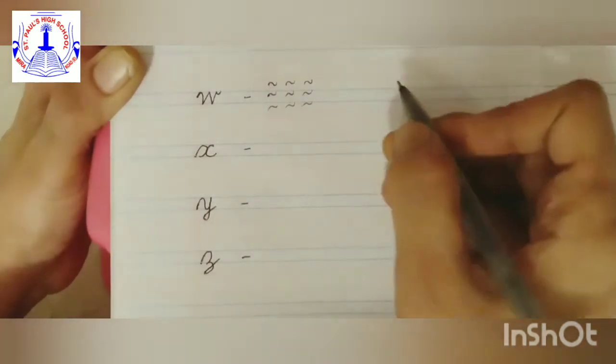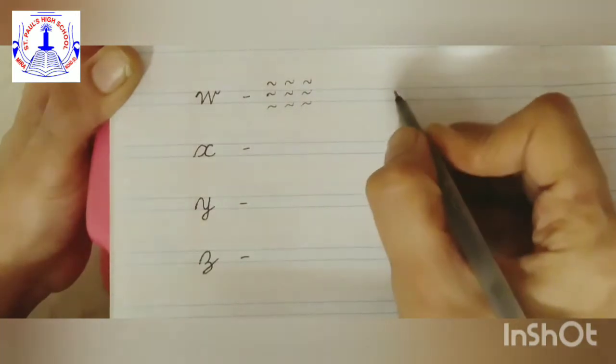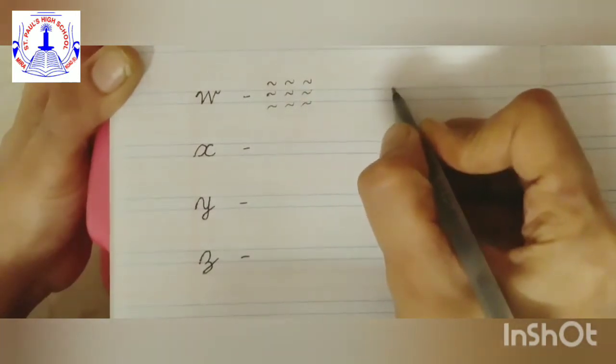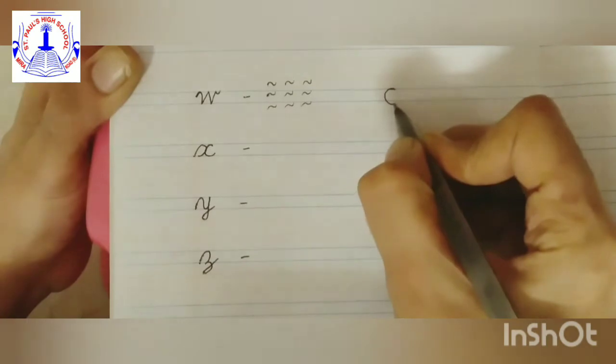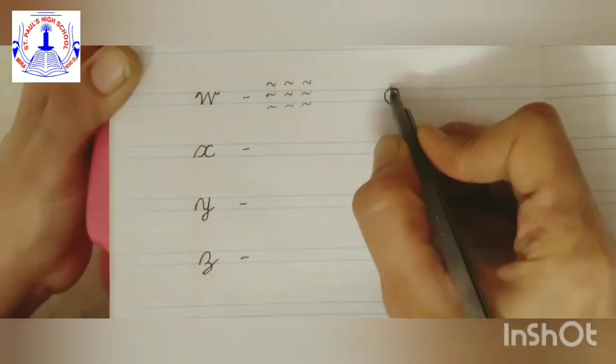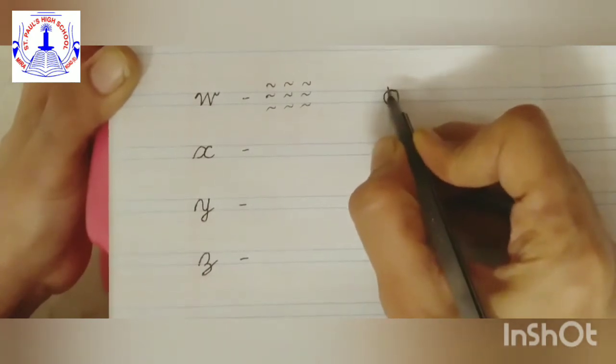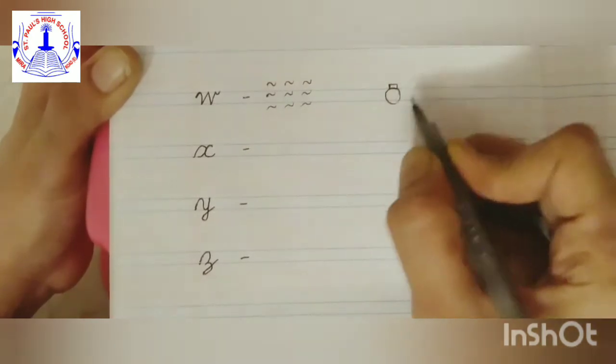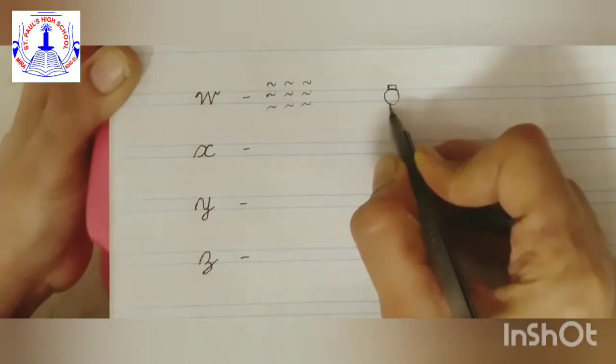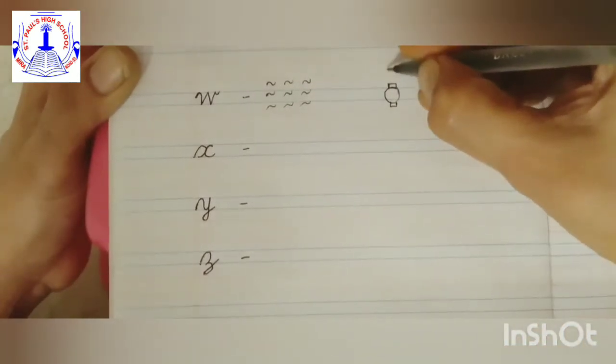Now, the second object. We are going to draw a watch. Make a circle like this. Okay, on both the side up and down, make a small triangle shape, okay, and then draw a strip, like this.